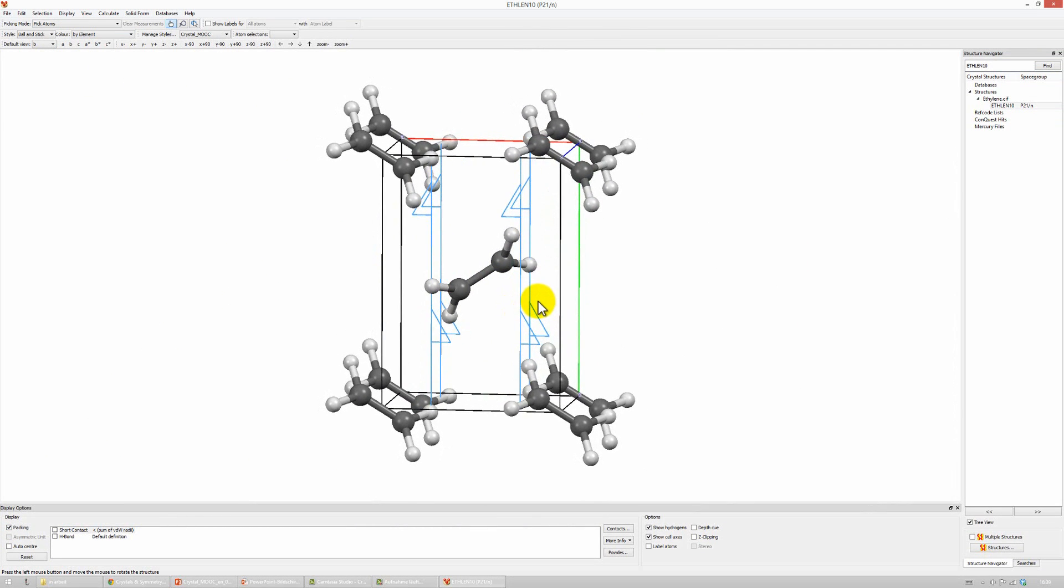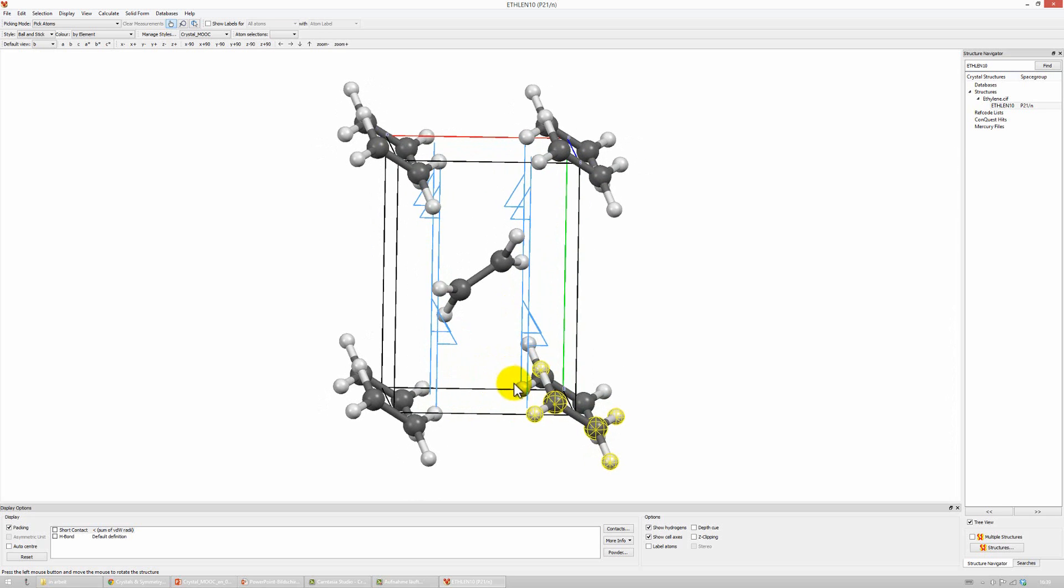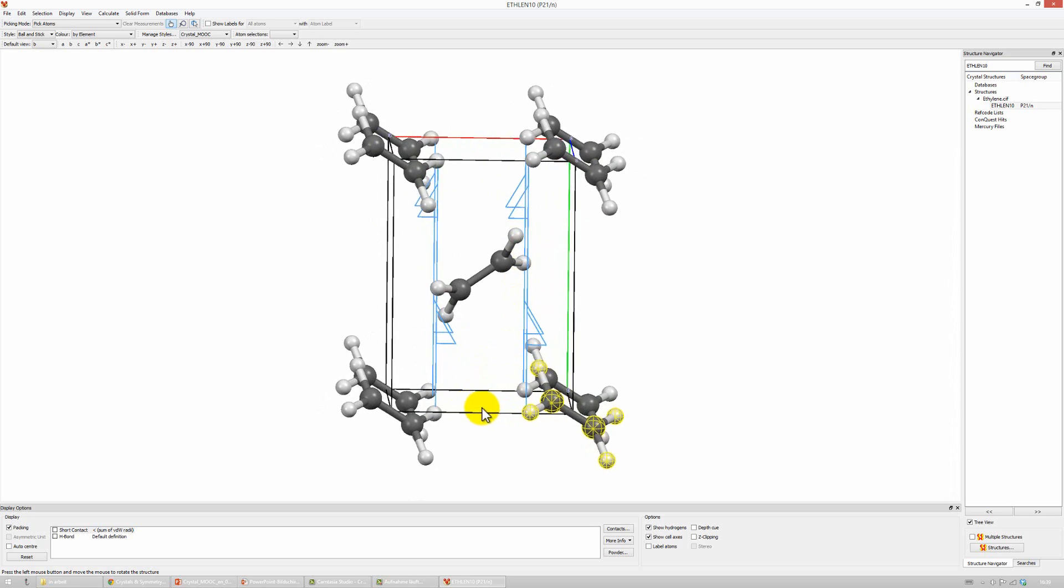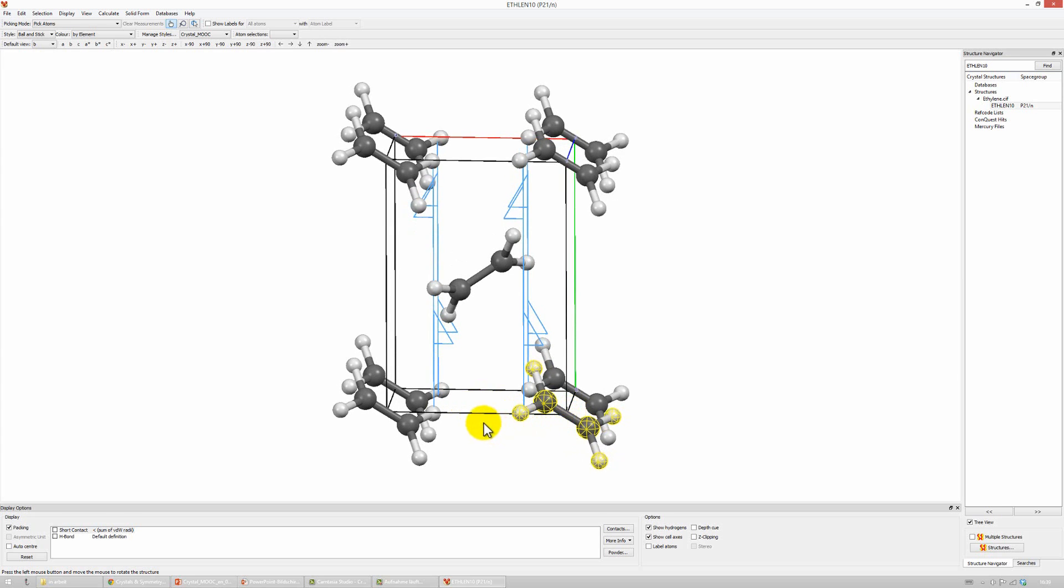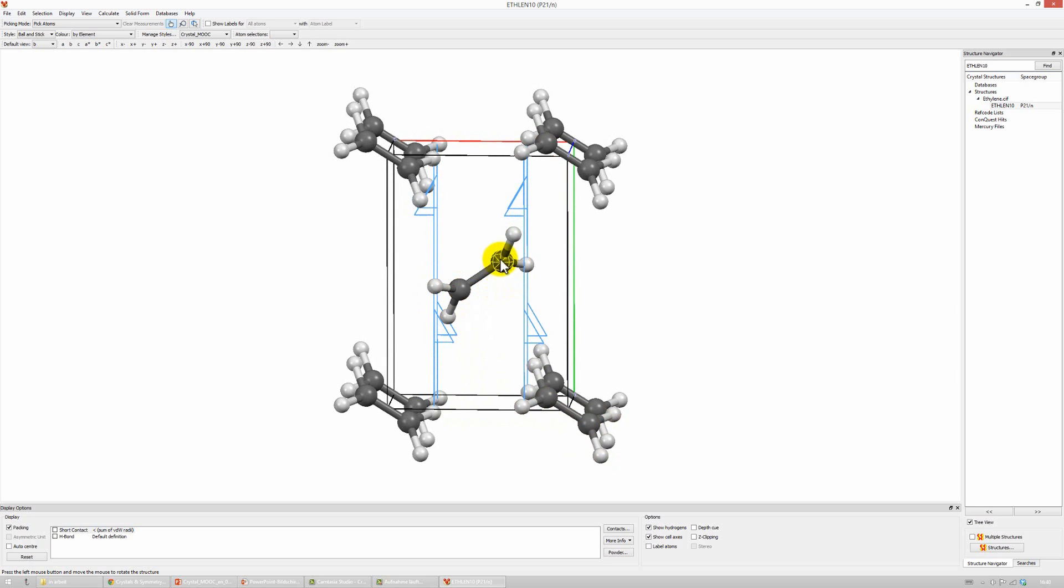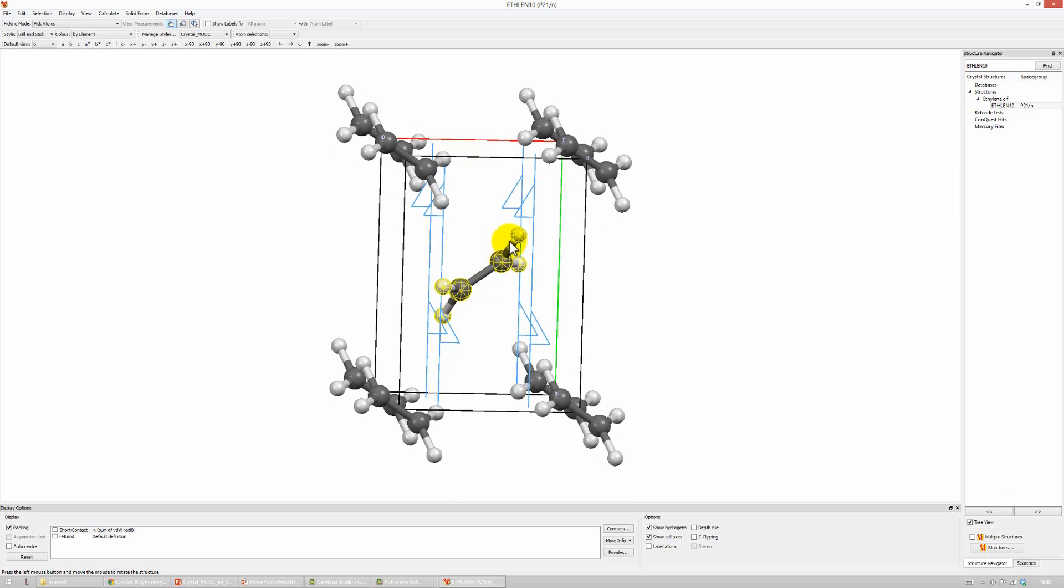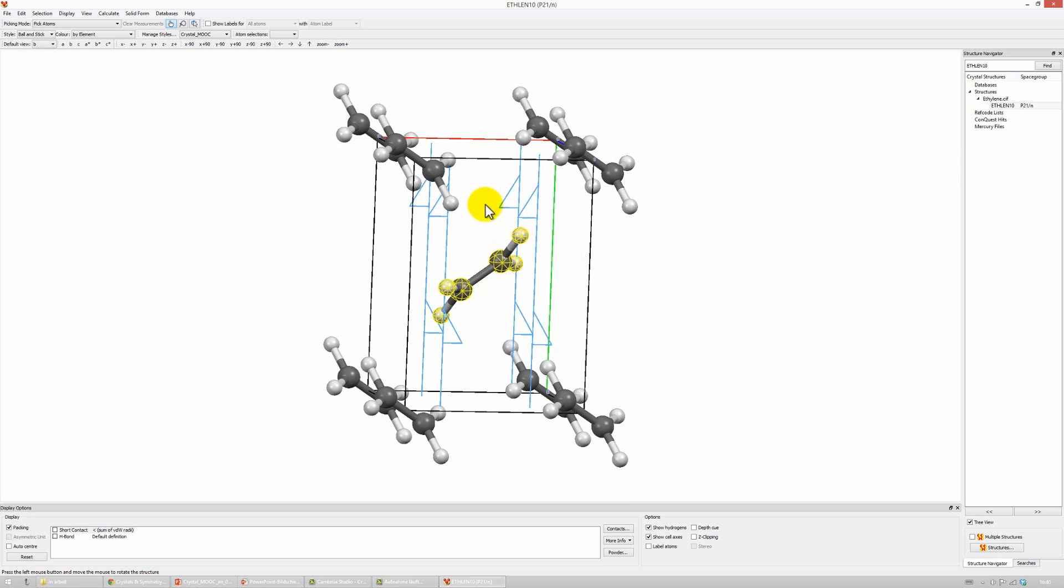So, which ethylene molecules are symmetry related to each other by these 2₁ screw axes? Let's see, we could, for instance, choose this molecule. Let's mark it. And now we can apply this axis. This means, we first have to rotate by 180 degrees, and then we have to translate the molecule by one half along the b direction. And this means, it will be mapped onto this molecule in the center. Now, we can apply another 2₁ screw axis to this molecule. And this means that this molecule in the center is now transformed into that one at the corner of the cell. And so on.